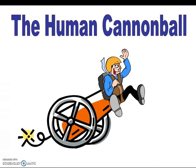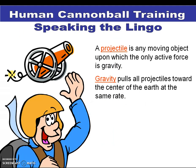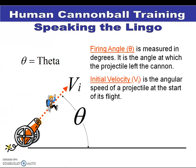So — a human cannonball. We can think of a cannon, or any projectile, as any object that's moving with just the use of gravity. So we're shooting it, and as soon as it leaves the barrel, there's no other force acting upon it other than gravity. We're going to look at the angle, because that's going to be important, and our initial velocity — those are the only things that we know. And if we know those two things, we can predict where it will land.